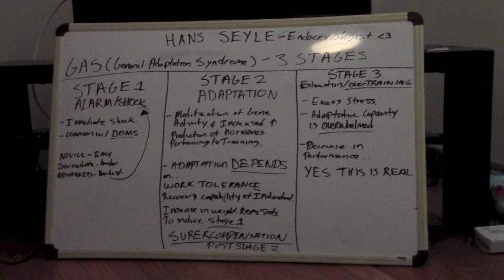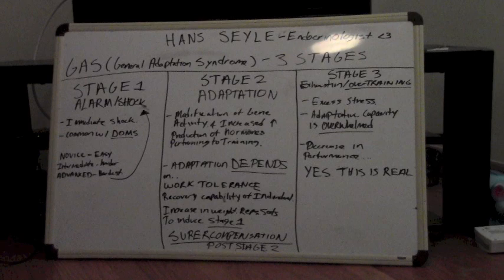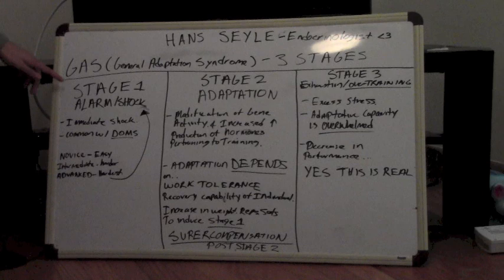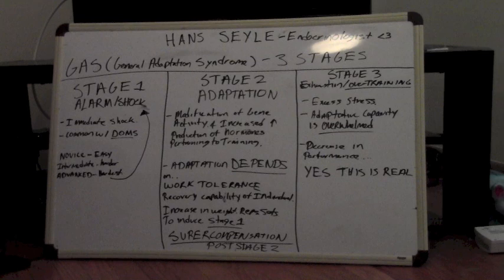First off we have GAS, and what this is — it's a theory that he proposed which states essentially us humans have three stages of how we react to biological stressors, or in this case exercise being our external stressor. These are the three stages: stage one being alarm and shock, stage two being adaptation, and stage three being exhaustion and overtraining.